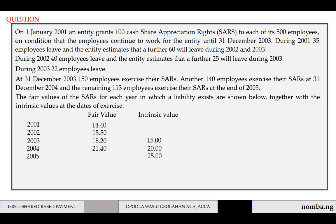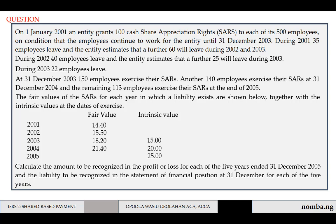We're given fair values from 2001 to 2004 and intrinsic values from 2003 to 2005. Employees started exercising their rights from 2003, which is why we're given intrinsic values from that point. The intrinsic value is the difference between the fair value of an option and the exercise price — essentially the gain to the employee, representing the increase from the price of the right at the grant date to the exercise date.